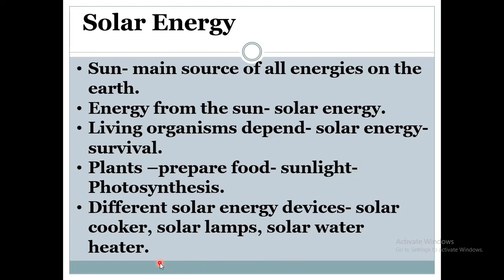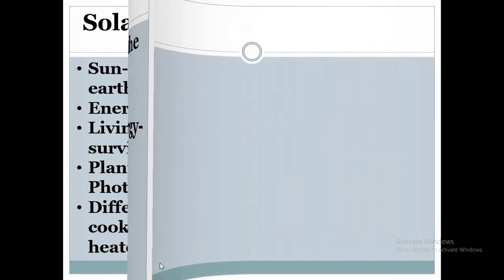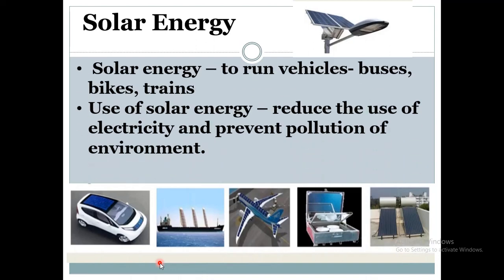The sun is the main source of all energy and living organisms depend on solar energy for their survival. Plants prepare food in the presence of sunlight through photosynthesis. Solar energy is used to run vehicles, buses, bikes, and trains. The use of solar energy reduces the use of electricity and prevents pollution of the environment. Nowadays, due to the use of fuels in vehicles, there is increased air pollution, but using solar energy can prevent that.